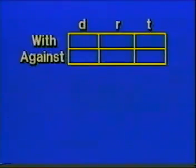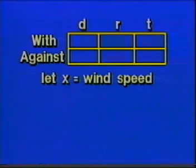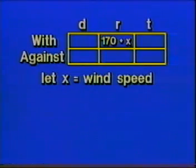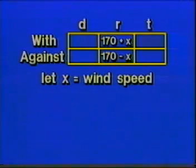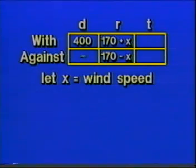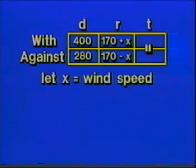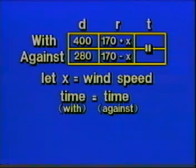Although we have one vehicle, we have two directions of travel: with the wind and against the wind. We're going to let X stand for the speed of the wind. When the wind is helping the airplane, the speed going with the wind is 170 plus X. Going against the wind, the wind is working against the airplane, so the speed would be 170 minus X. The distances are given: 400 miles with the wind and 280 miles against the wind. The equality of time becomes our basic concept for a solution.